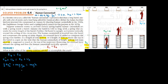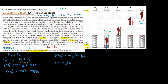Now we can rearrange these terms to calculate k. Moving mgyB to the other side gives: half k·yB² equals mgh minus mgyB. Since mg is a common factor, we write half k·yB² equals mg(h minus yB). Then multiplying by 2 and dividing by yB² gives k equals 2mg(h minus yB) divided by yB².